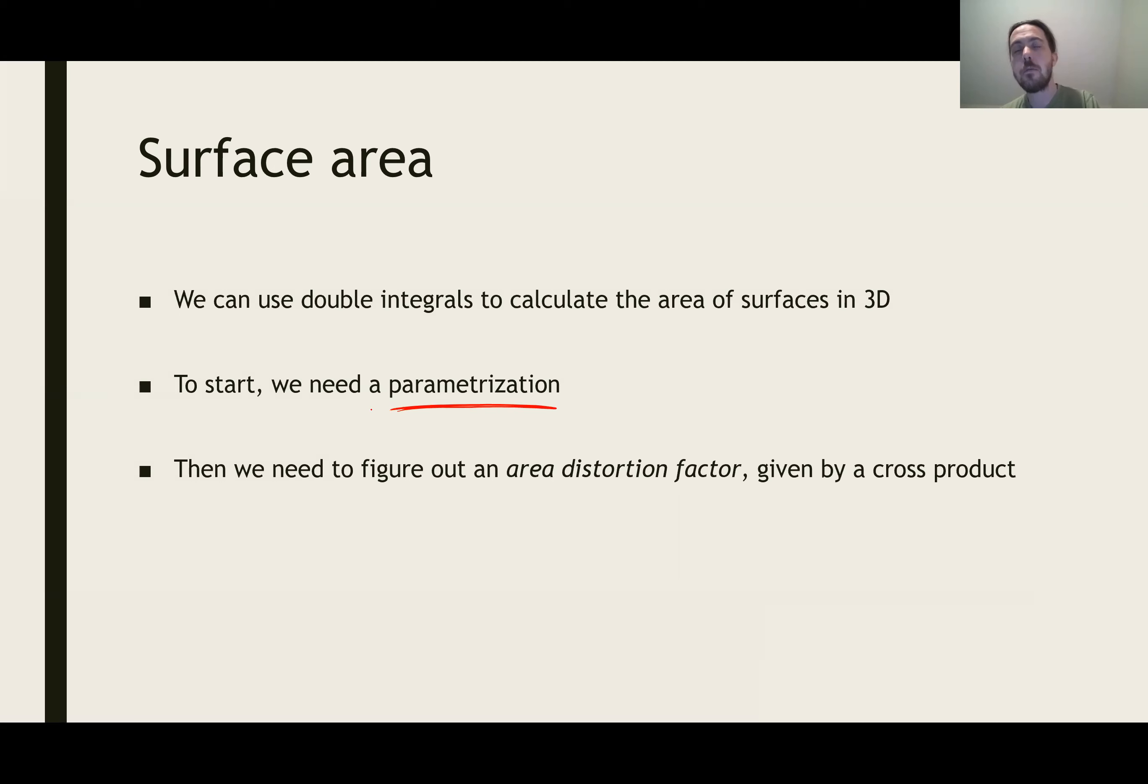And to start that off, we need to have a parameterized surface. We have to have some kind of map that sketches out all the points of that surface using two coordinates. And then in order to calculate the surface area, it's important to calculate an area distortion factor that tells us exactly how big the surface is in some areas and how small it is in other areas. And it's very similar to how we needed a distortion factor for change of variables with double integrals.